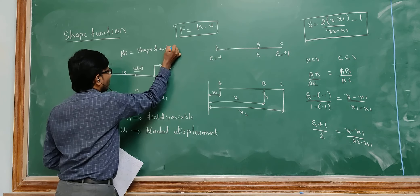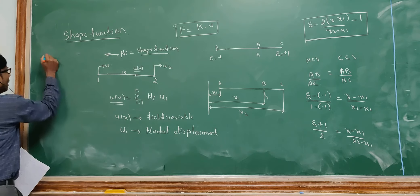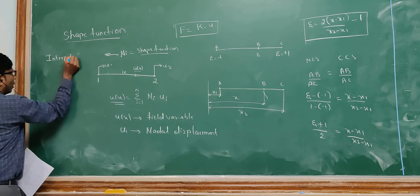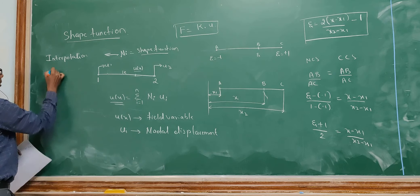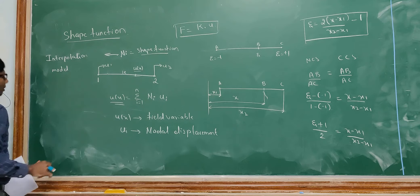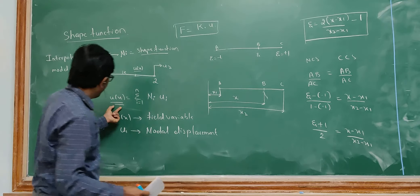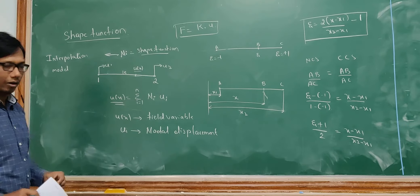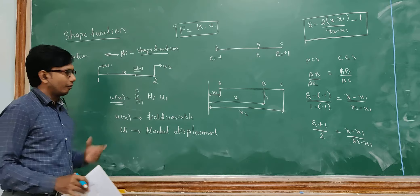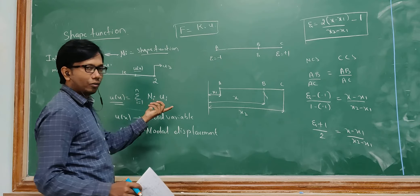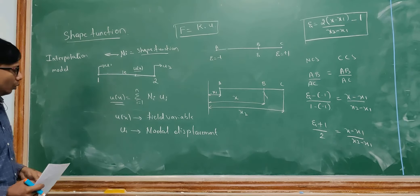Nodal displacement is the displacement at the nodes. Shape function is always an interpolation model — it gives the relationship between the field variable (displacement at any point) and the nodal displacement. In FEM you will be getting only nodal displacements, but if I want to know exactly at a certain point what is the displacement, I should have a relationship which gives the connection between a field variable and a nodal displacement. That is called the shape function, where Ni is the shape function. Shape function is nothing but an interpolation model.